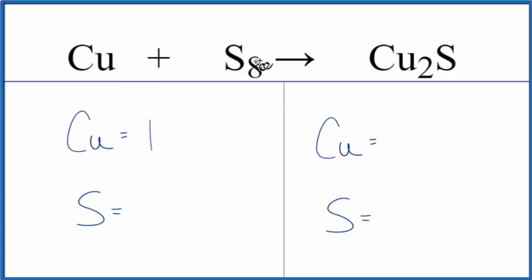We have one copper atom, eight sulfur atoms in the reactants. Products: two copper, one sulfur.